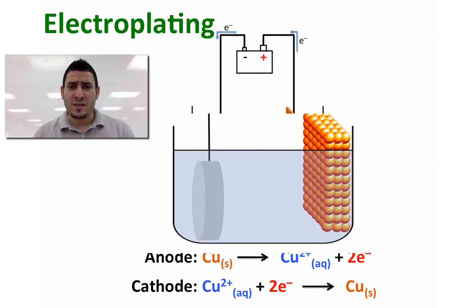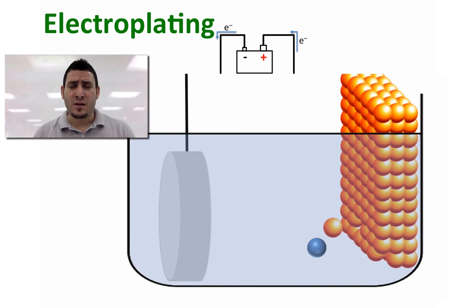As you can see here, copper ions are being generated from the anode and are being reduced at the cathode, which means plated on the surface of the ring. The copper electrode will decrease in mass with time, and the ring will increase in mass with time.